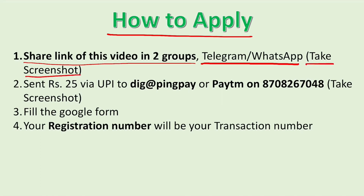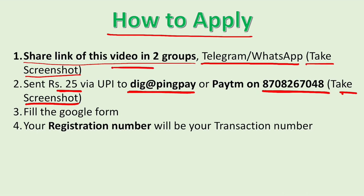Then take a screenshot. Send Rs 25 on this UPI address or this Paytm number, then take a screenshot of that payment. So you will have three screenshots in total: two screenshots of the link shared in two groups, and one screenshot of the payment. Then fill the Google form — the Google form link is given in the description below.